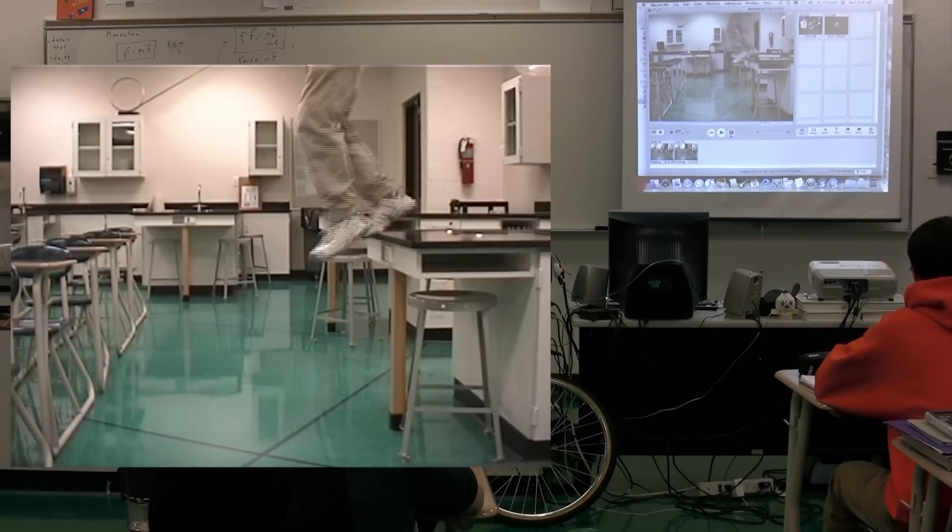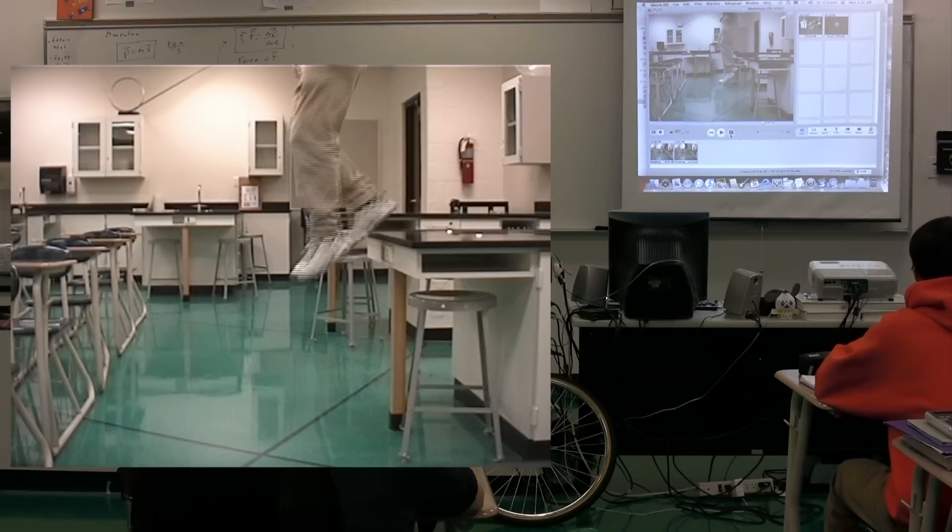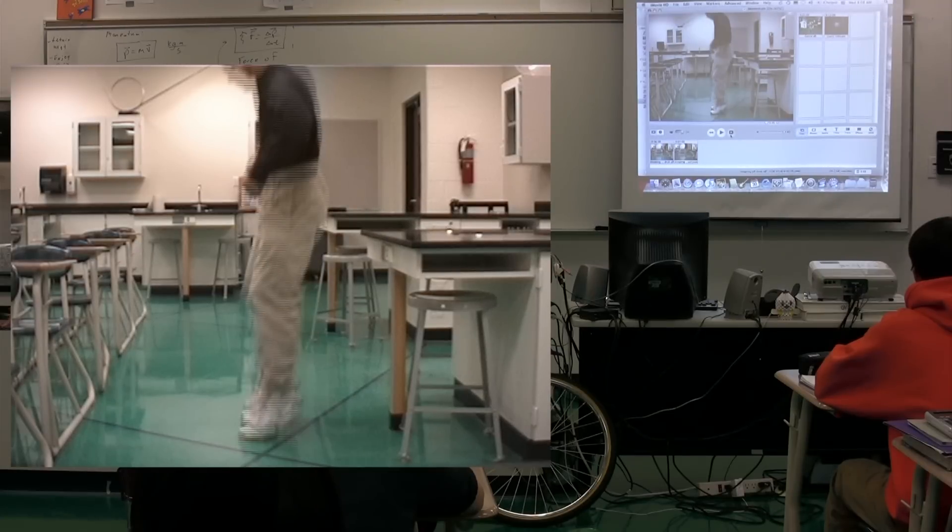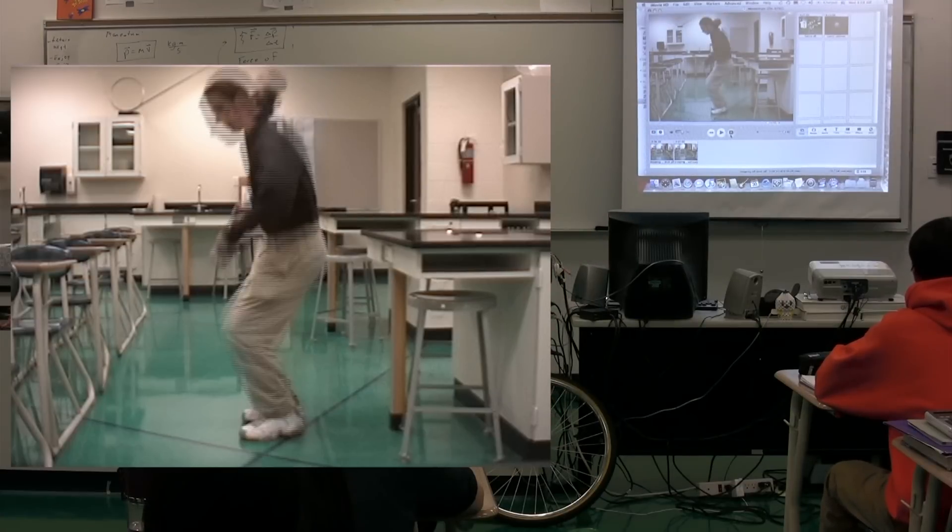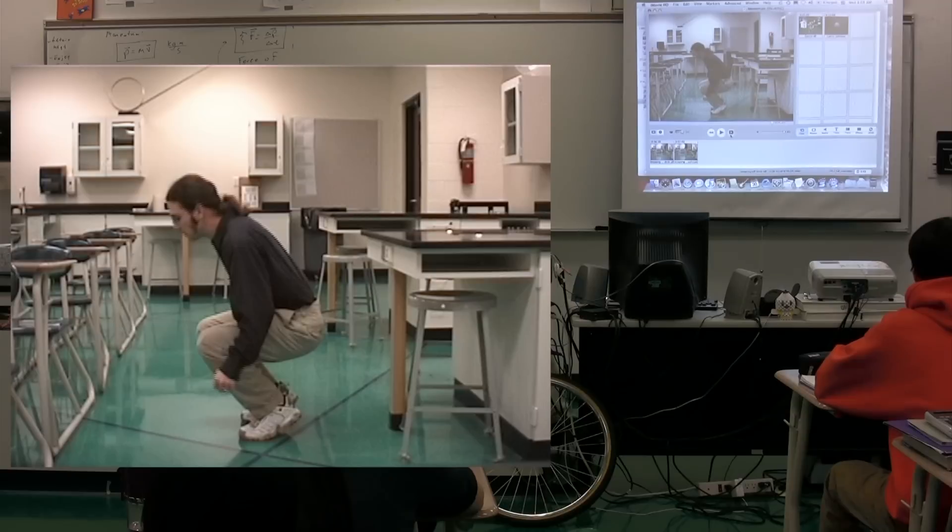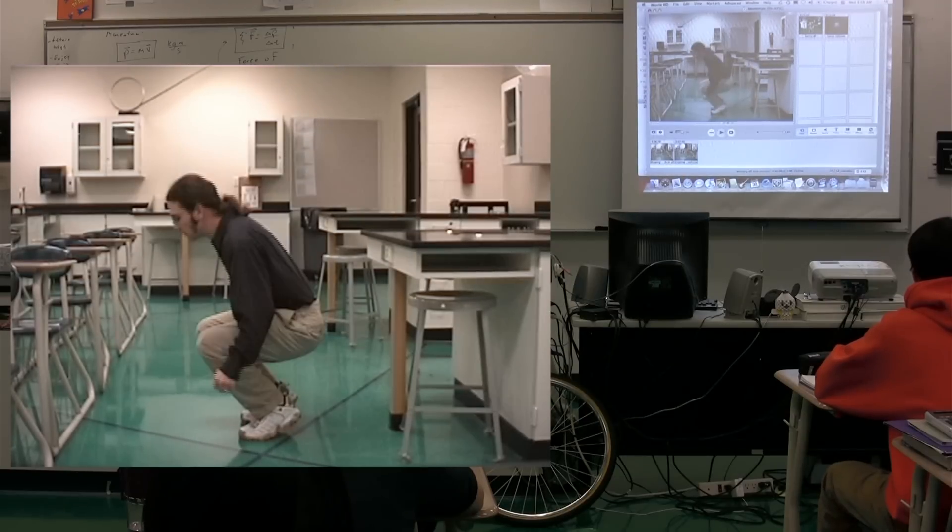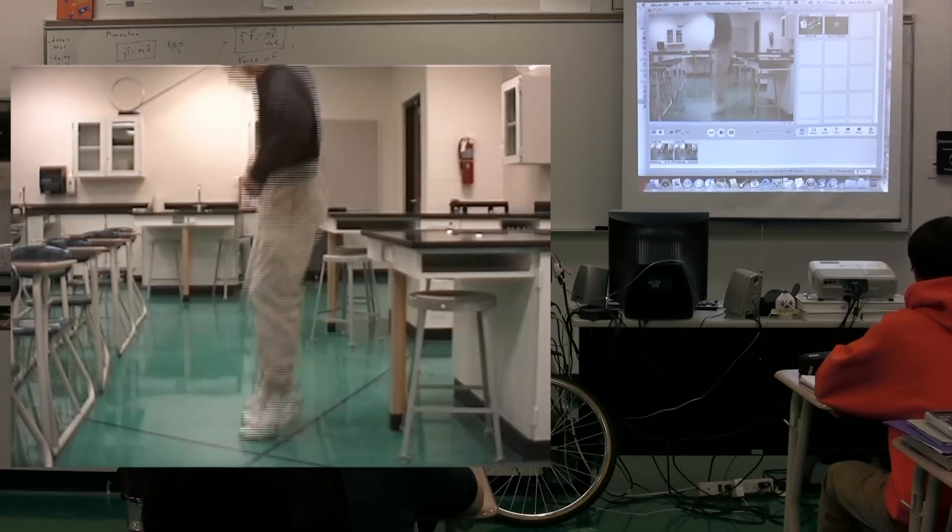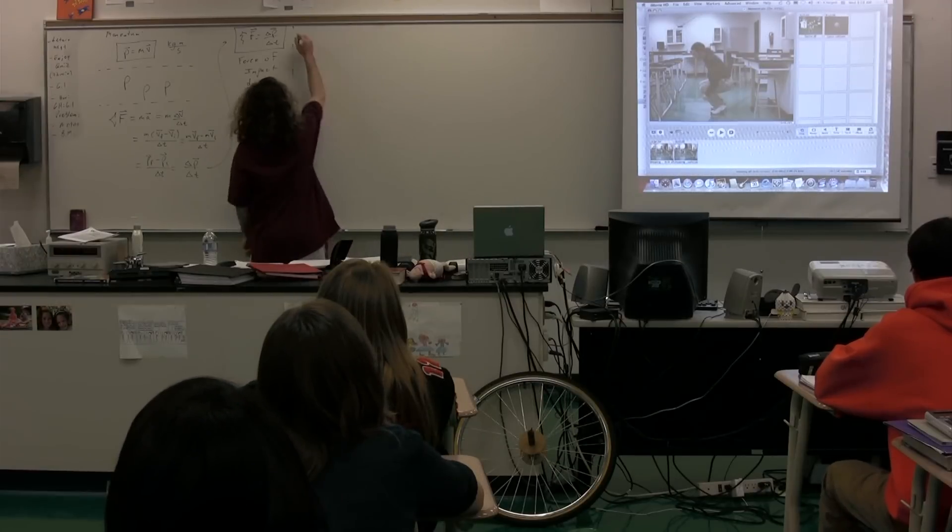We have two different parts. I start up here, step off the desk. We have the free fall portion, which is right here. And then right there is where I start to collide with the ground. This is the beginning of the second part. And then I collide with the ground right here and bend my knees. What we're going to look at and figure out is the net force during this collision.